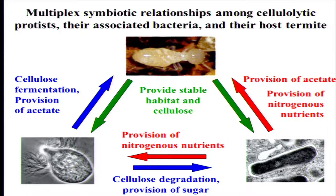This is a simplified view of the multiplex symbiotic relationships among cellulolytic protists, associated bacteria, and the host termite. The host termite provides a stable habitat and cellulose. Cellulolytic protists degrade cellulose and ferment it; the final fermentation product is acetate, which is utilized by the termite as carbon and energy sources. Cellulolytic protists provide intermediate sugars to the endosymbiont, which obtains ATP from sugar fermentation and provides nitrogenous nutrients to the host. The final fermentation product is predicted as acetate, and the termite gets benefit from the endosymbiont.